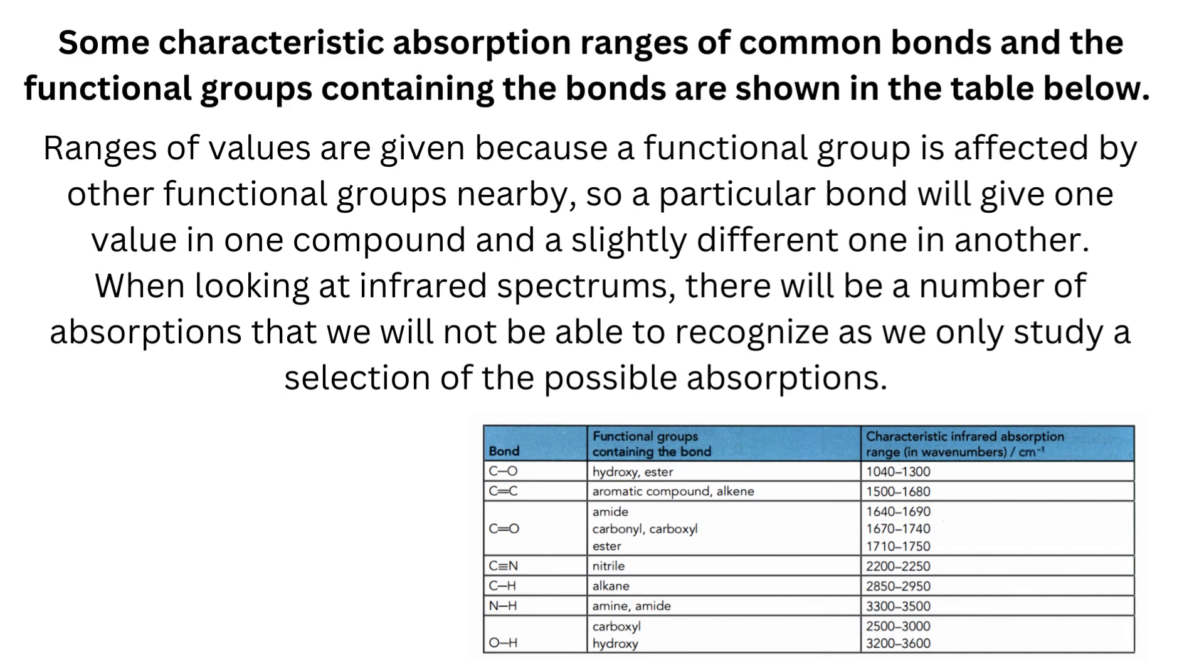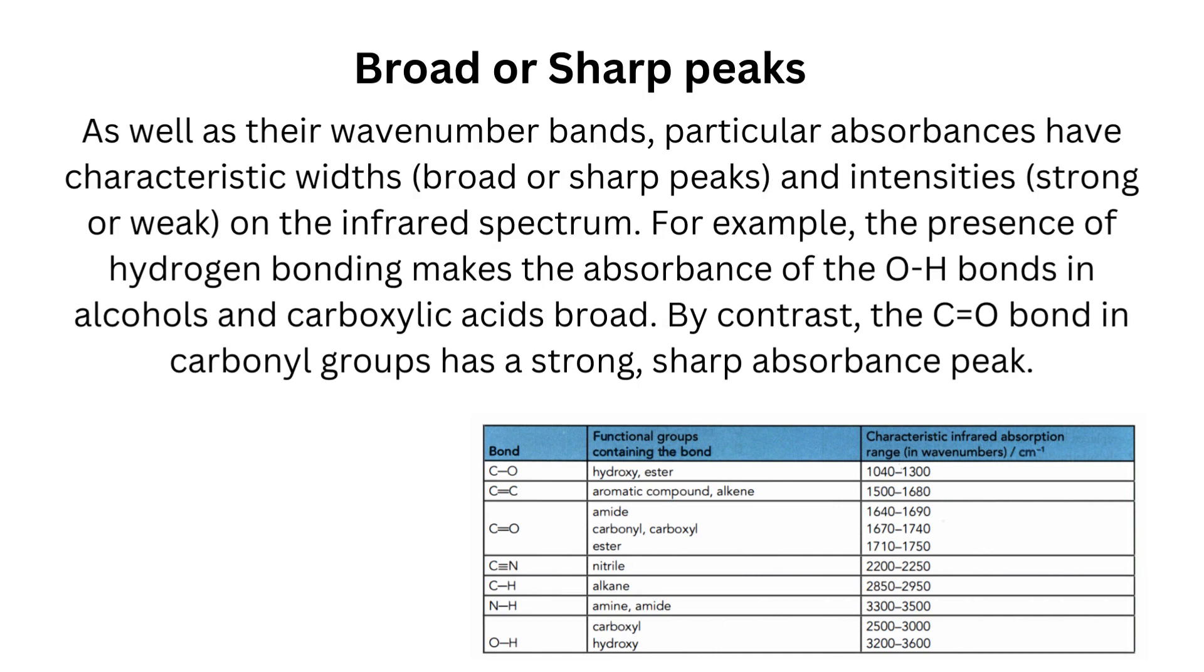Broad or sharp peaks: As well as their wave number bands, particular absorbances have characteristic widths (broad or sharp peaks) and intensities (strong or weak) on the infrared spectrum. For example, the presence of hydrogen bonding makes the absorbance of the O-H bonds in alcohols and carboxylic acids broad.